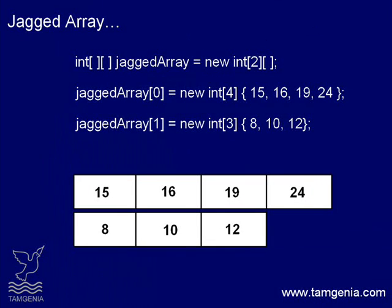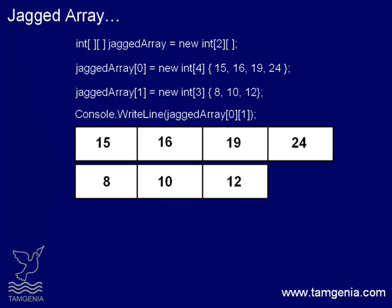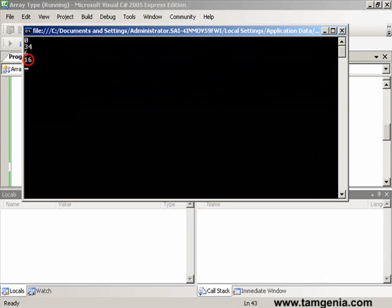In the first element of our jagged array, we store an array with size of 4, and the second element is storing an array with size of 3. In this line we are writing the value of the second element of the first sub-array inside the jagged array. Here the first number is representing the element of the jagged array storing the sub-array, and the second one is the element number of that sub-array. In this case the value we will get on console is 16. Okay, let's test it. Here we get what we are expecting.